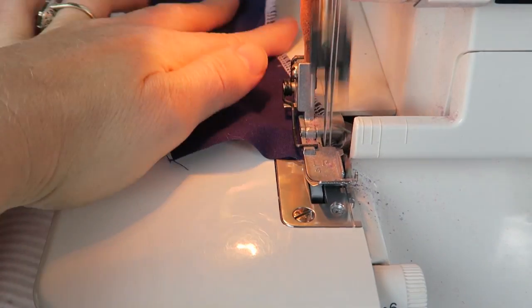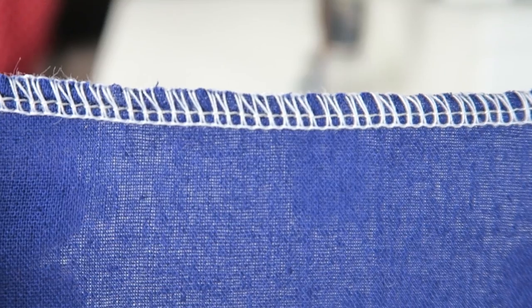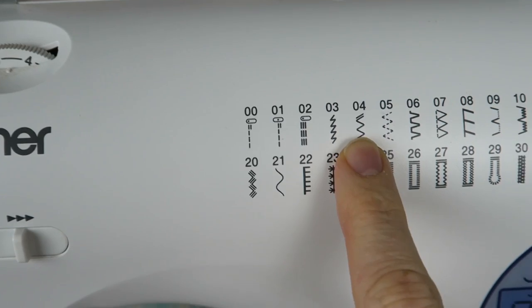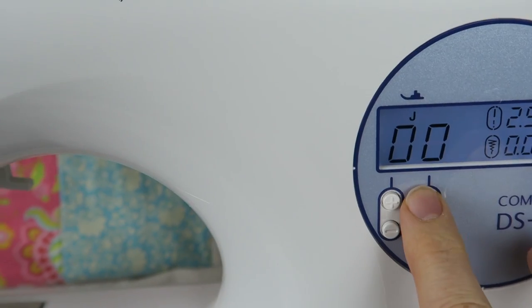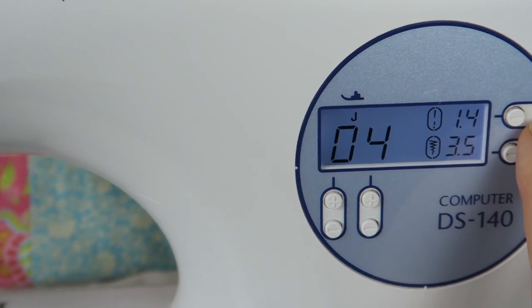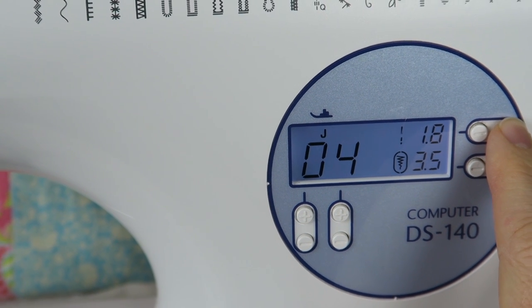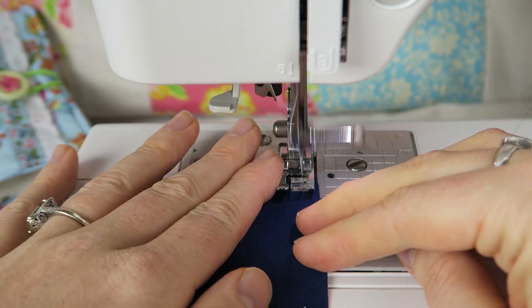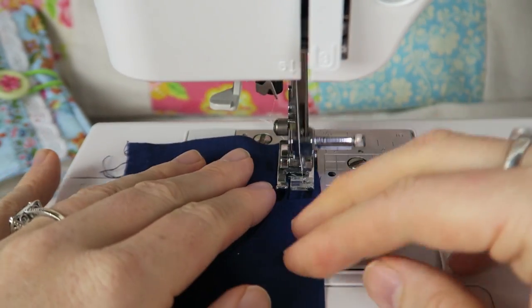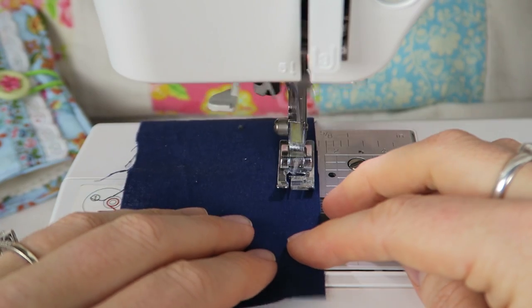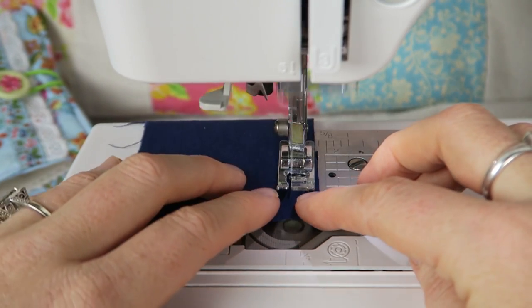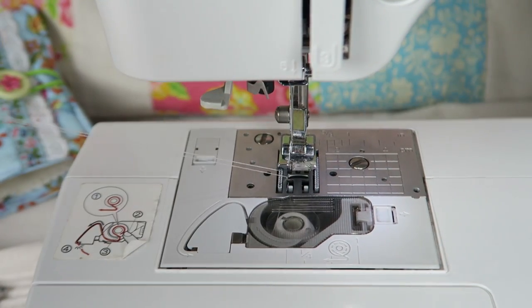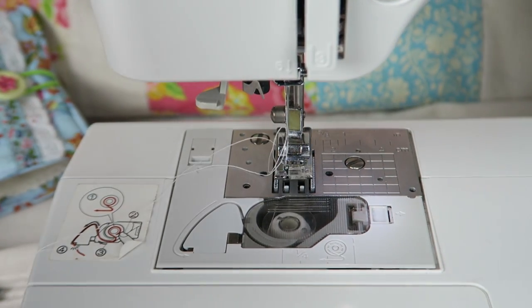So if you do not have an overlocker or serger and cannot sew these kinds of stitches to finish your raw edges, it is really easy to just use a zigzag stitch. If you have a very basic sewing machine, just use a wide stitch and then sew along the edge. Maybe not completely at the edge because then your fabric might slip and it'll all be bunched up under your presser foot, but just a wide zigzag stitch and then you can cut off the extra fabric.